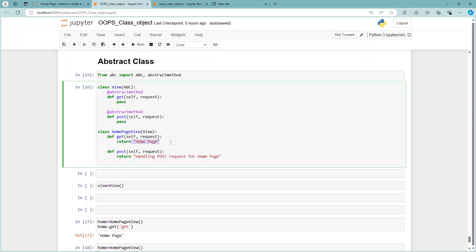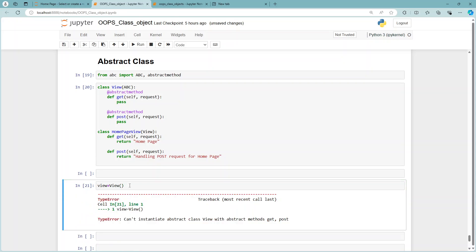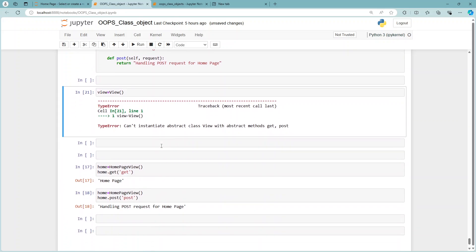I'm just trying to print it out, and here I'm printing 'handling the post request'. Let's see how it works. My class is View. If I try to create an object of this class View, it should give me an error. As I mentioned, you can't instantiate a class which is a parent class. That's why it's giving me an error.